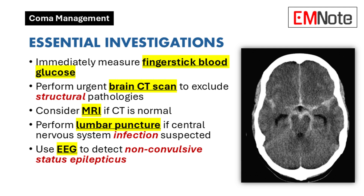Our sources point to three main diagnostic tools: blood tests, imaging studies, and an EEG. Blood tests are a great place to start — we want to rule out any metabolic disturbances, infections, and toxicities. So we're checking electrolytes, looking for signs of infection, and screening for drugs and toxins to get a broad overview of what's going on.